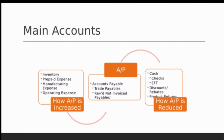Accounts payable can be relieved through cash, checks, EFTs (electronic fund transfers), or auto pays to vendors. A lot of auto pays are being set up, so it's important to make sure those are correctly configured — you don't want any auto pays going to employees. Discounts and rebates can also be applied to reduce accounts payable, as can product returns.